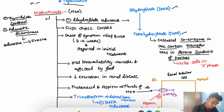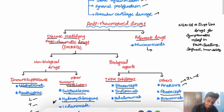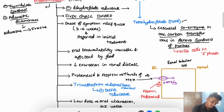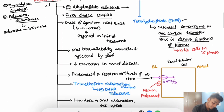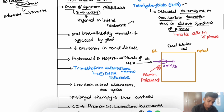Methotrexate is the first-choice disease-modifying anti-rheumatic drug. If you want to provide symptomatic relief, NSAIDs are the first-line drugs. Methotrexate has a quick onset of symptom relief — it takes around 3 to 6 weeks — so it is preferred in initial treatment.